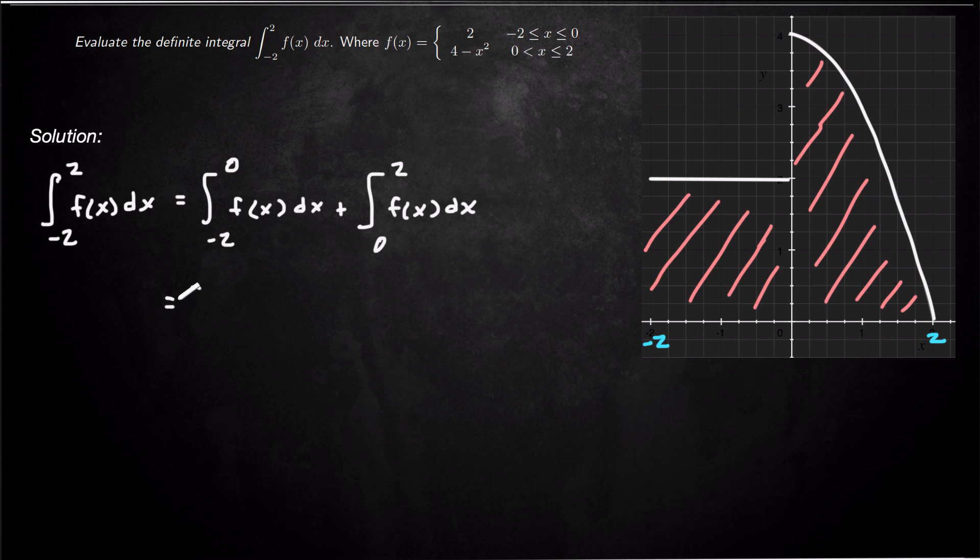And so this integral is going to become the integral from negative 2 to 0—well what is f equal to on this interval? Well it's equal to 2. So 2 dx plus integral from 0 to 2, 4 minus x squared dx. So depending on where you are, it determines what piece of the function you use.